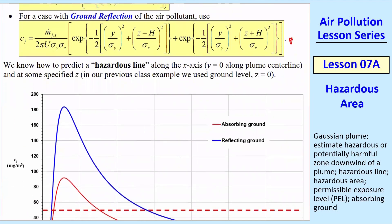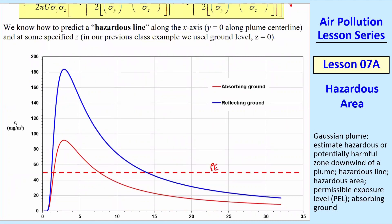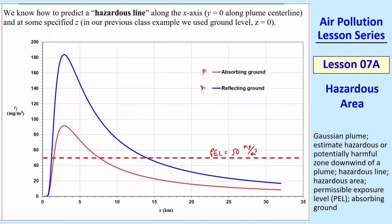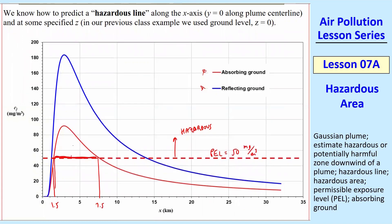We know how to predict a hazardous line along the x-axis. If we define some PEL, say this can be a PEL or a NAQS if you're doing one of the criteria air pollutants, or if it's a HAP you would use the PEL for example. So let's just suppose that we have a PEL of 50 milligram per cubic meter for the particular chemical we're talking about. And I showed you how to draw this kind of a curve. This is both for the absorbing and the reflecting case.